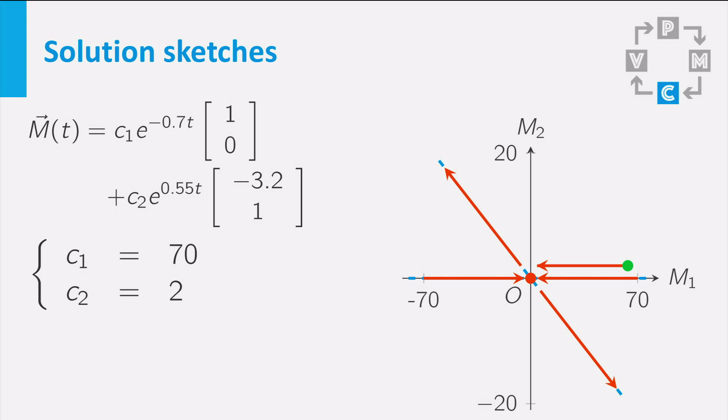The exponential for the positive eigenvalue becomes bigger and bigger, so this part eventually dominates in the behavior of the solution. But this means that the solution starts to point more and more in the direction of the second eigenvector.